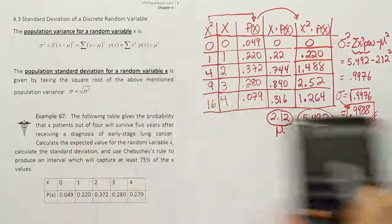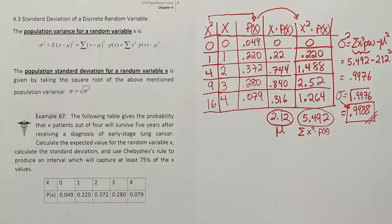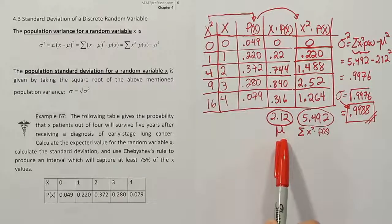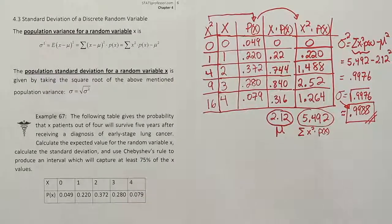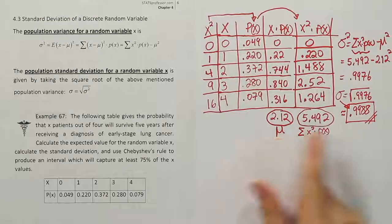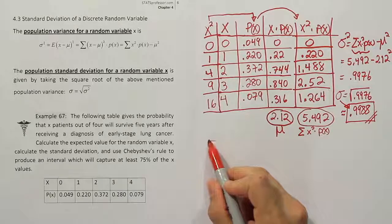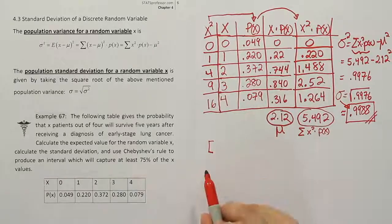Okay. So we have our standard deviation and we have our mean. This means we're actually able to use Chebyshev's theorem at this point. Right? Chebyshev's theorem says that within two standard deviations above and below this mean, you will capture 75% of all the X values. So let's do that. Let's take this mean and let's subtract two of those standard deviations from it.